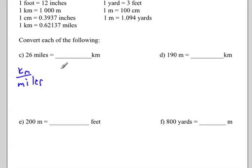And what we want to do here is put 1 over 0.62137. But this time, you're looking for the number of kilometers. We'll put in k for kilometers, and we're given that we have 26 miles, because miles has to go on the bottom.